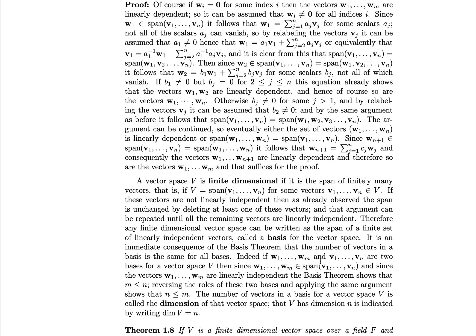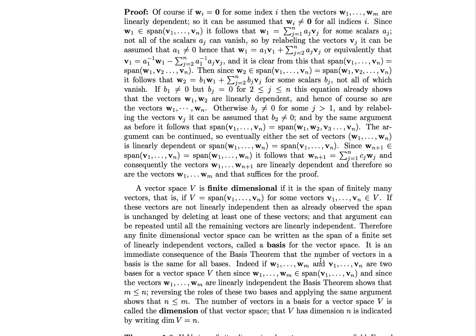Finally, let's consider finite dimensionality of a vector space, which is closely related to the idea of a basis or spanning set. A vector space V is finite dimensional if it is the span of finitely many vectors — that is, if V equals the span of v1 up to vn for some finite list of vectors where n is a natural number. If these vectors are not linearly independent, then you can delete at least one, and you can repeat this until the remaining vectors are linearly independent. Therefore, any finite dimensional vector space can be written as the span of a finite set of linearly independent vectors, which you call a basis for that vector space.